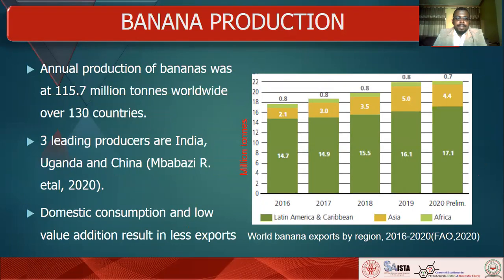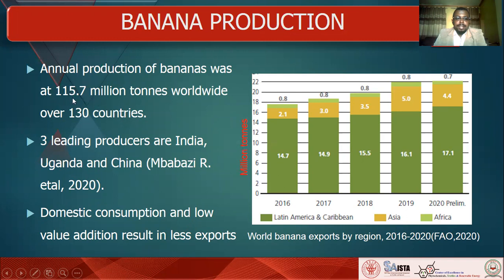When we look at the global banana production, Latin America and the Caribbean have the highest exports from 2016 to 2020. Africa and Asia have been the lowest exporters from 2016 to 2020. But there is high production — 115.7 million tons worldwide within 130 countries.